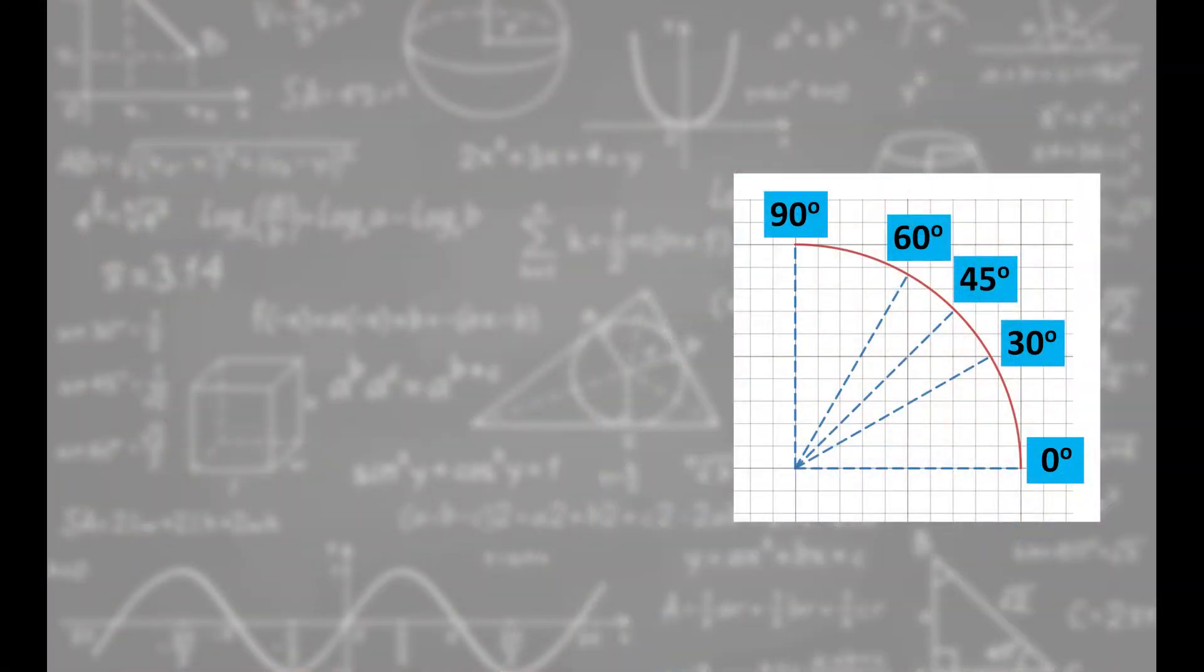Here are the special angles on the XY plane. In numerical order from bottom to top: 0, 30, 45, 60, and 90 degrees.